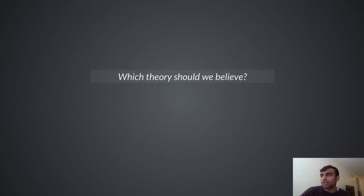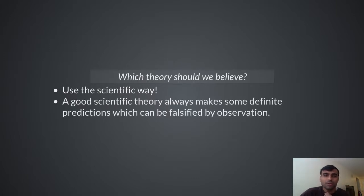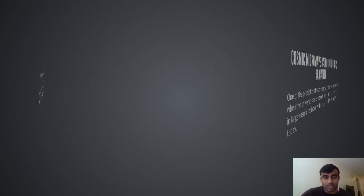But which theory should we believe? We should use the scientific way. Any theory must make a definite prediction which could be falsified by observation — that is why astrology is not a science, because it cannot make a definite prediction, and if it does make one you can certainly falsify it by observation.